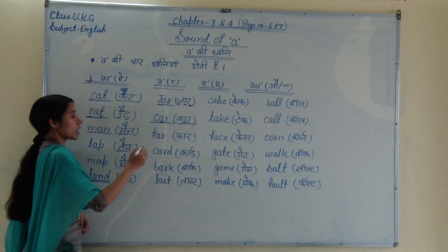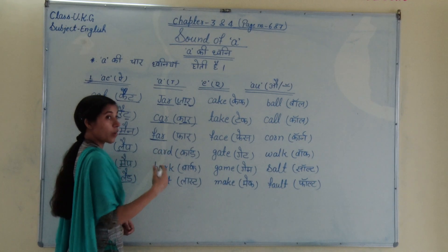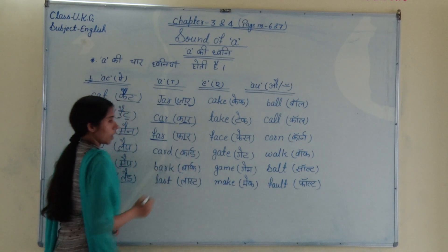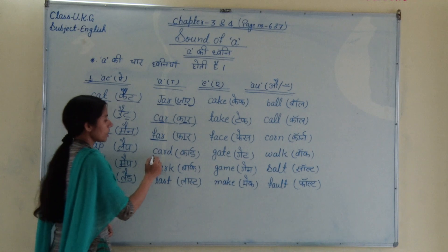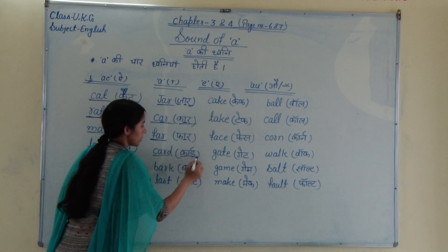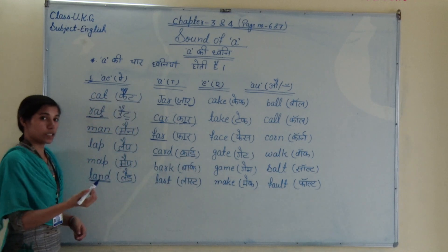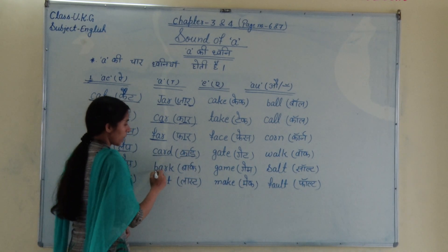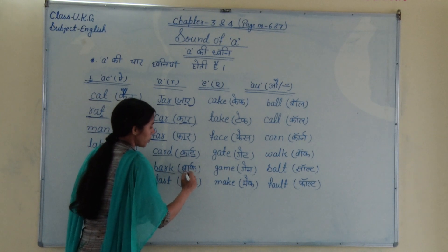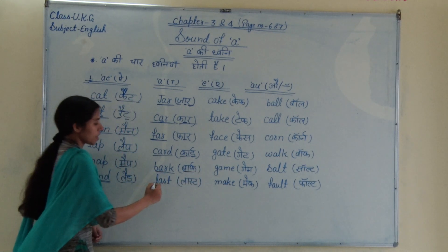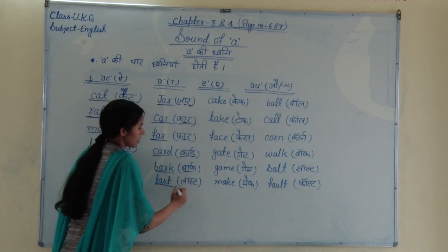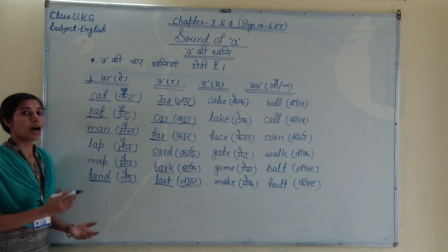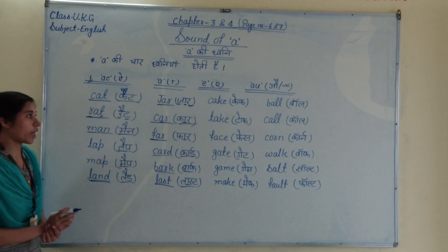Teesra hai akka: far. Far — 'a' ka arti rupi. Phir hai akka: bar. Isi tarah phir hai akka: bar. Last hai akka: last. Last — yahan bhi 'a', r ke rupi hora hai.